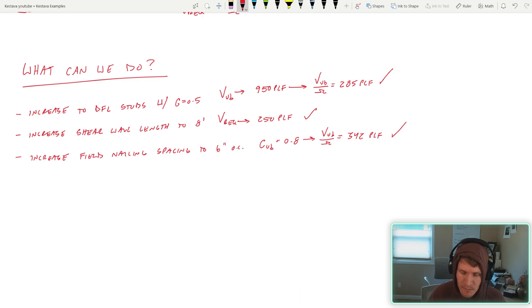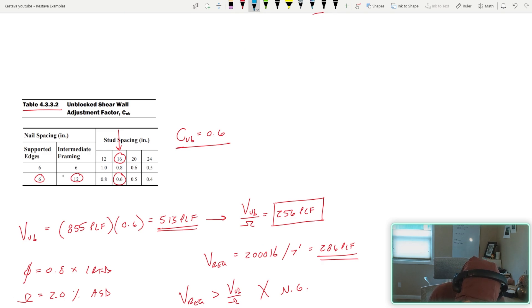Or the last one: we can increase the field nailing spacing to 6 inches on center instead of 12 inches on center, which is customary. That changes your C sub UB to 0.8 from 0.6, so that jacks up your capacity side as well to 342, which also achieves it. Let's take a look at that last one quickly. We're at our table, so now we're 6 and we're 6, and our stud spacing is 16 inches on center, so now we're—there you go—0.8 from 0.6. So what is that, 8 over 6? That's a 33% increase in capacity right there. Huge, huge bump. Very beneficial.